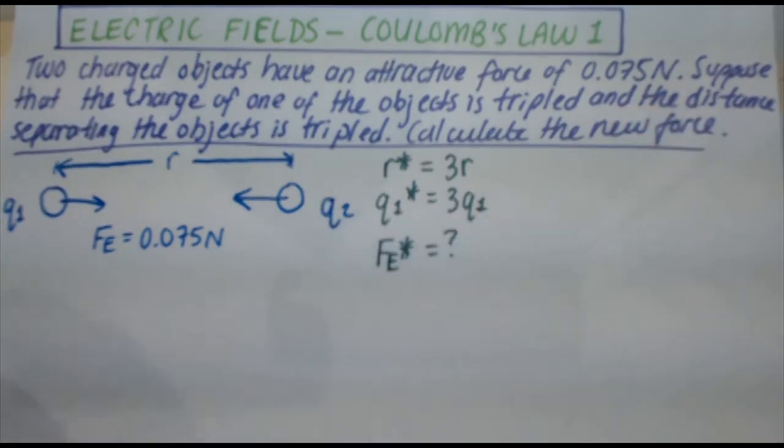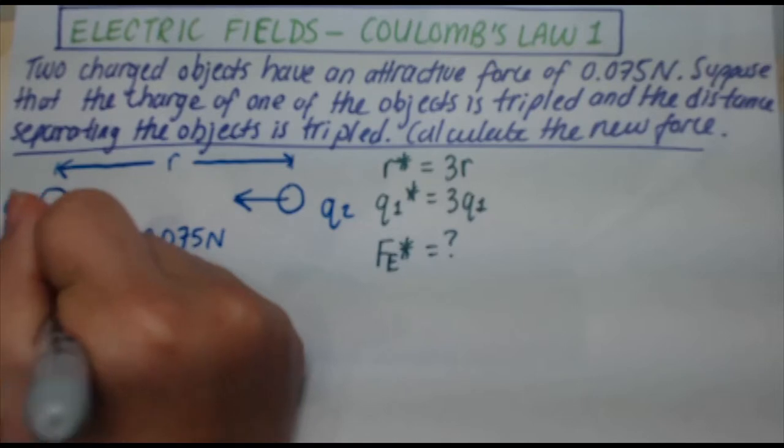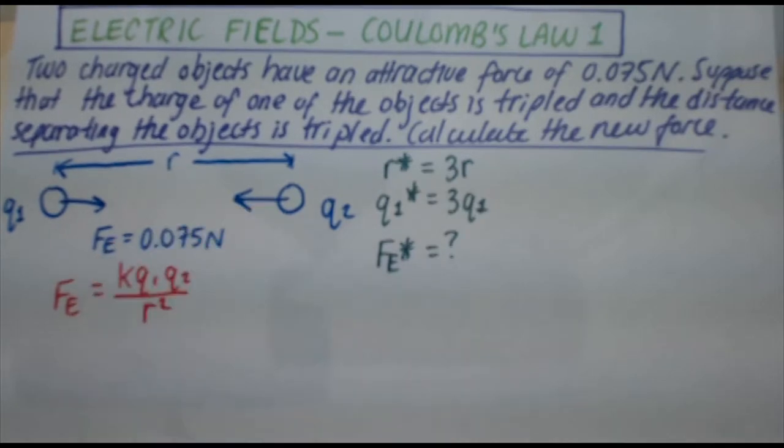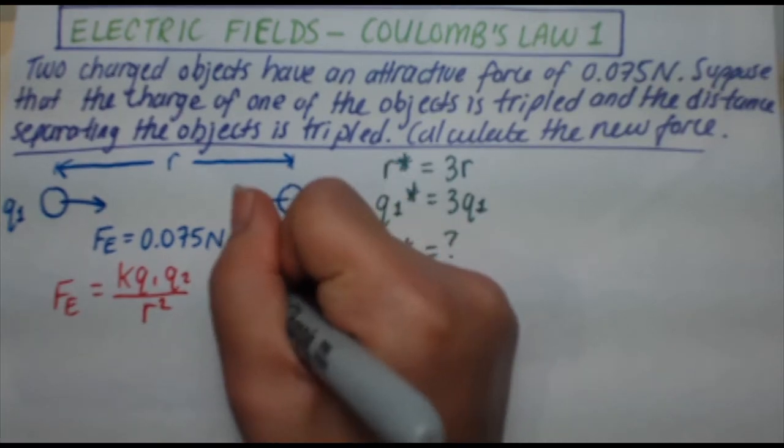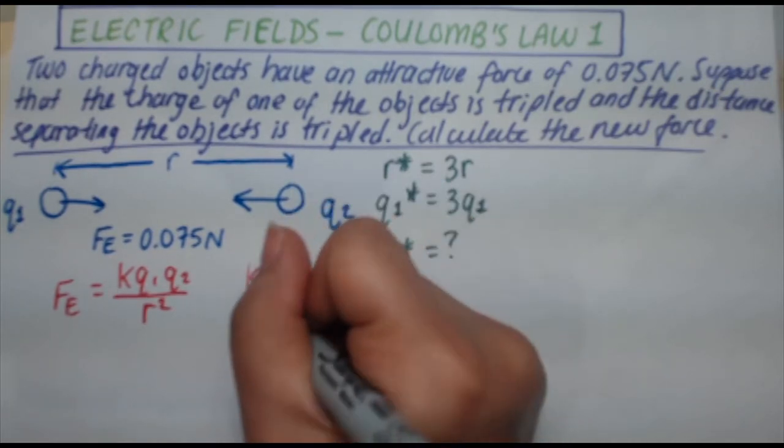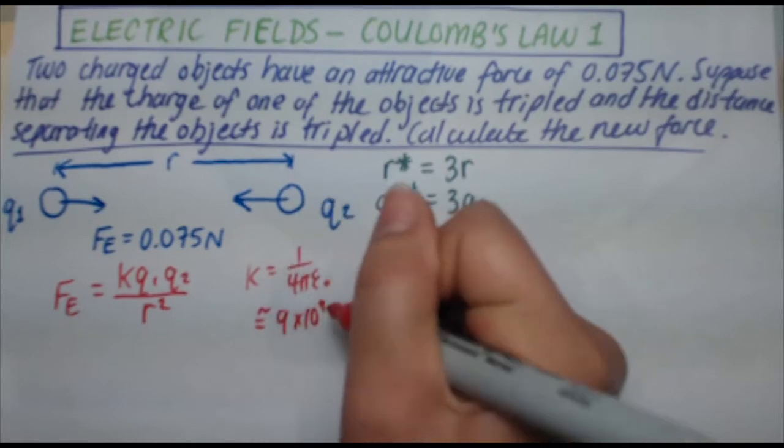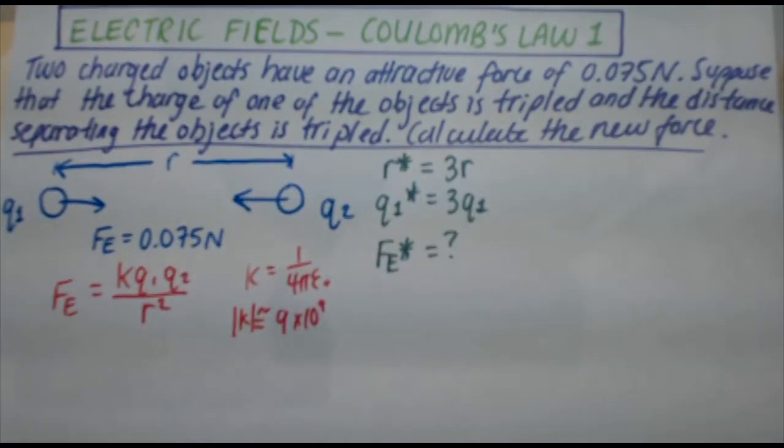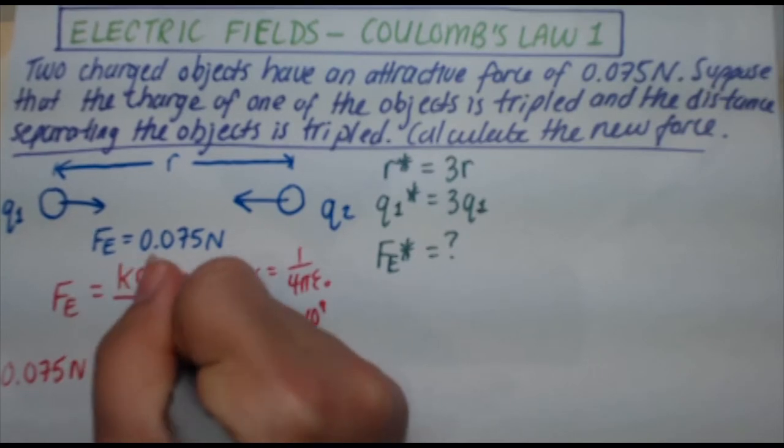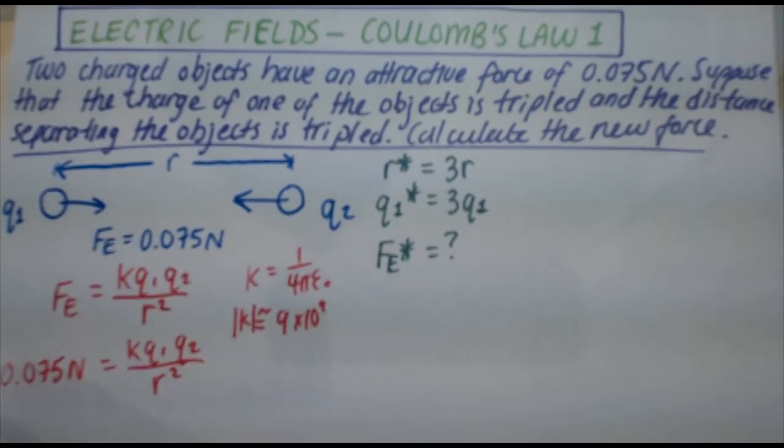I know the original formula for electric force. Electric force equals K Q1 Q2 over R squared. Be careful, don't mix up that K with the one from Hooke's Law. This is a different K, this is electric. K is actually given by 1 over 4 pi epsilon naught. The value of K is approximately 9 times 10 to the 9. For this problem, it won't be necessary to know that, but just for future reference. So this is my original electric force, and I know this equals 0.075 newtons. So 0.075 newtons equals K Q1 Q2 over R squared. This is going to come in handy soon.